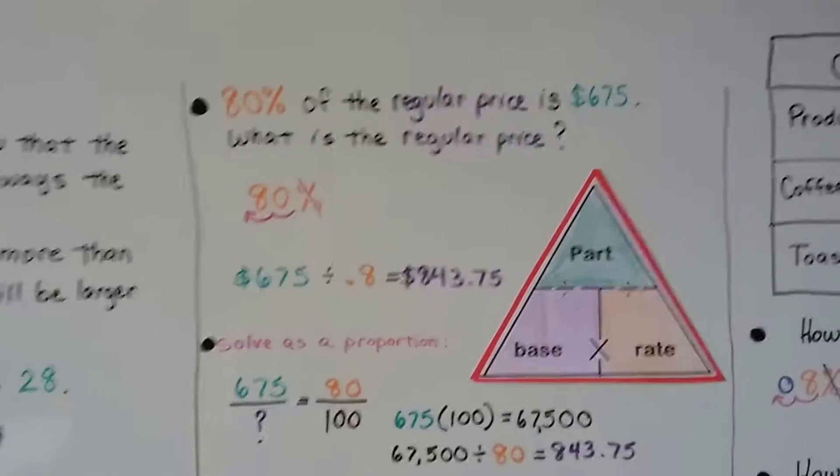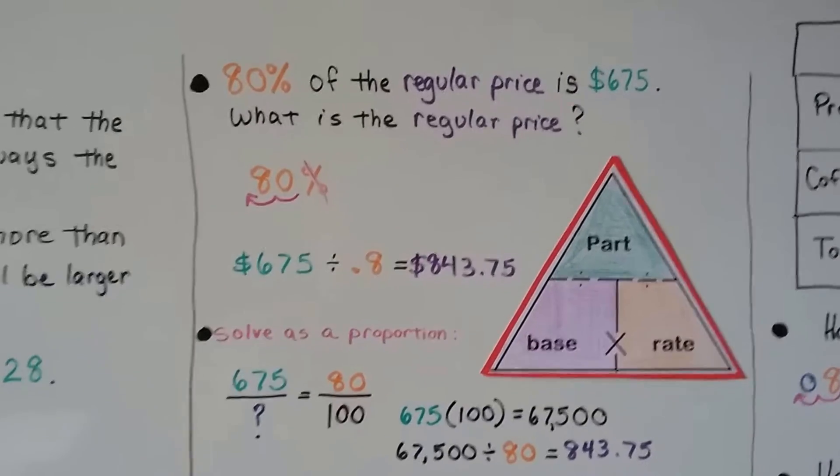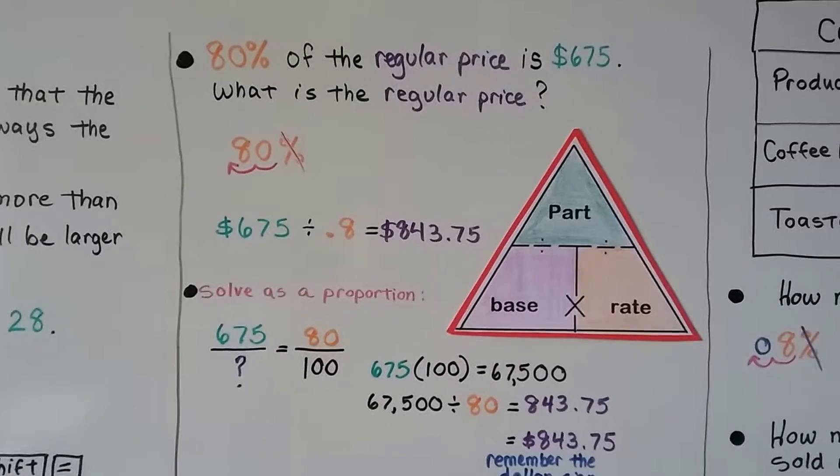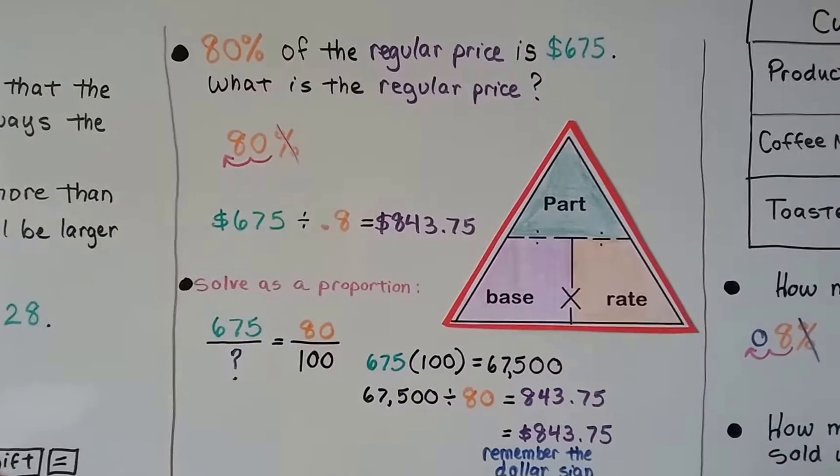Now, we've got 80% of the regular price is $675. What is the regular price? Well, the regular price is the original amount, that's the base, right? It's the original total.